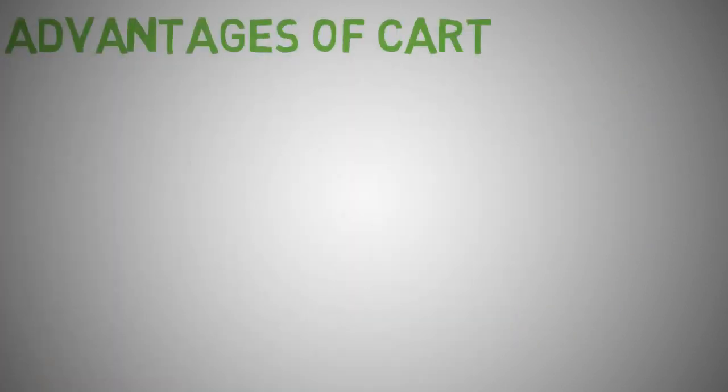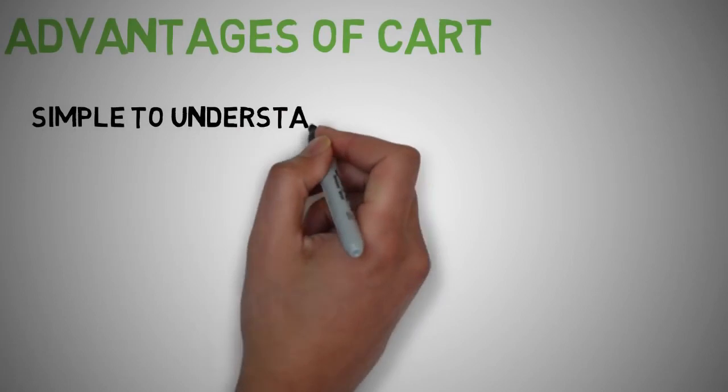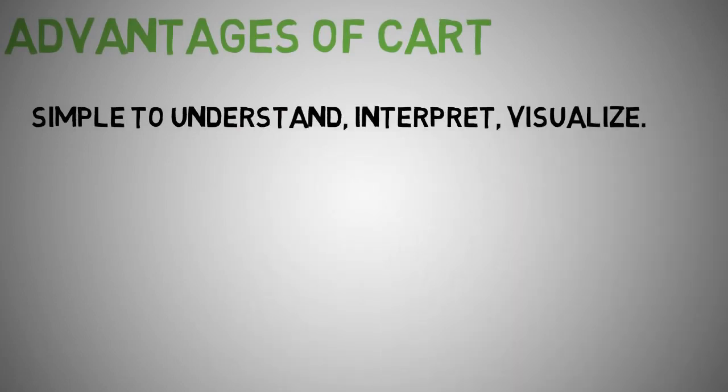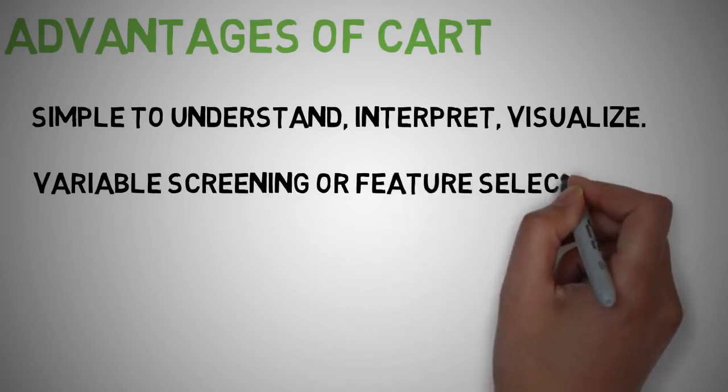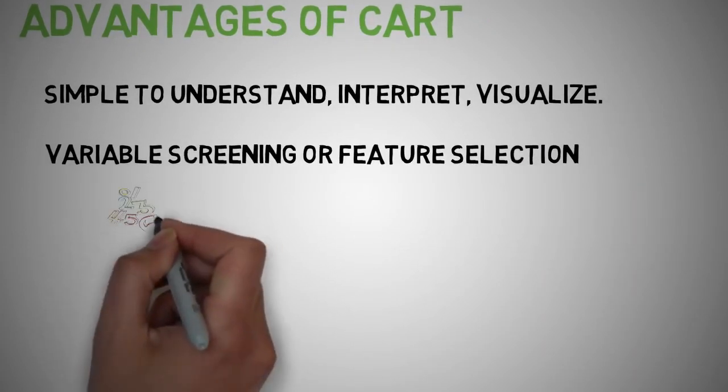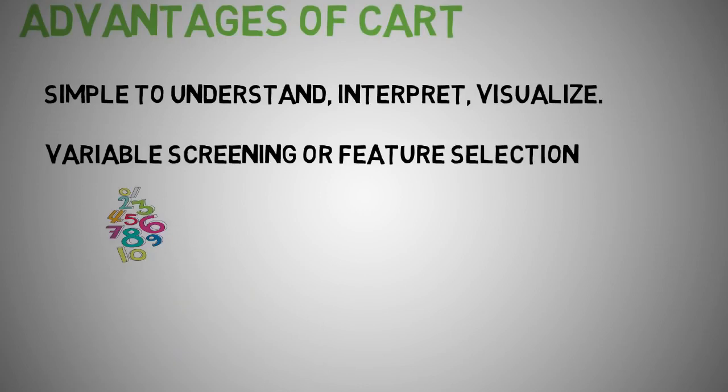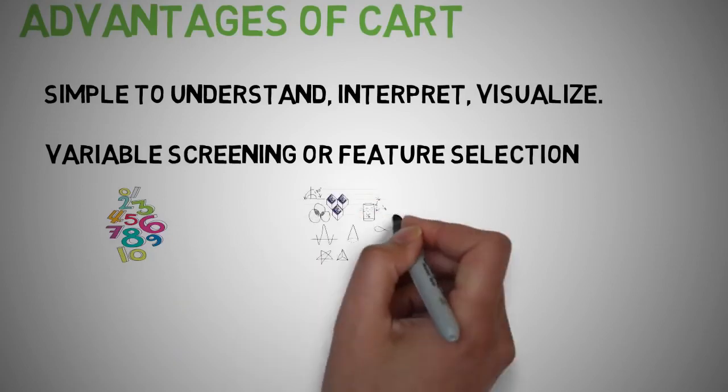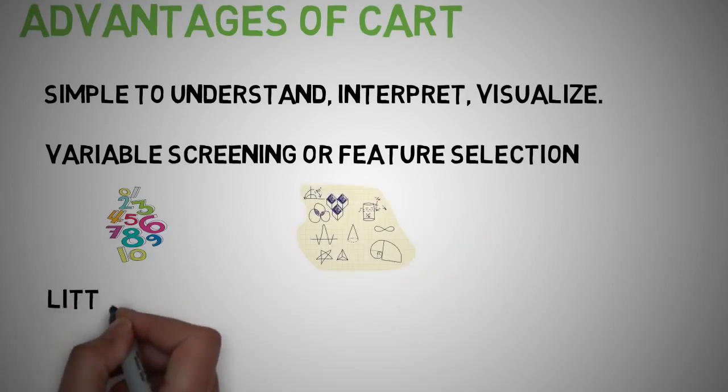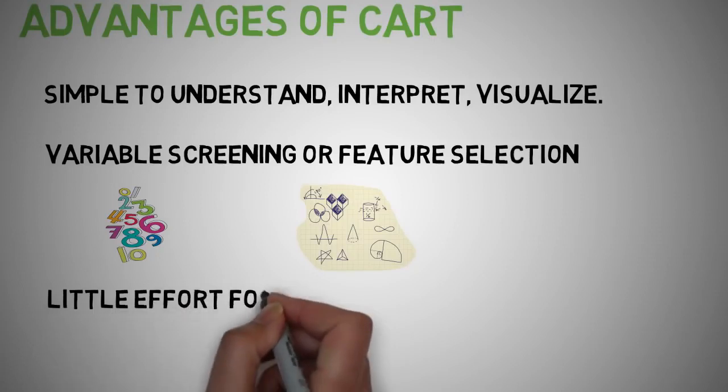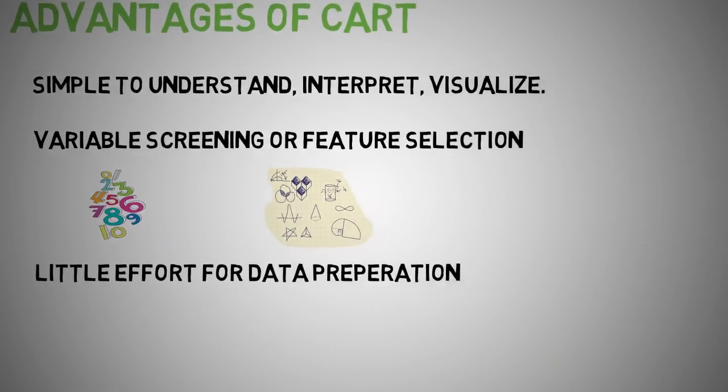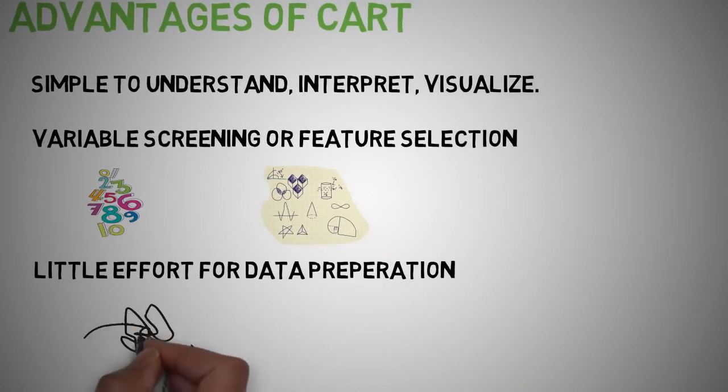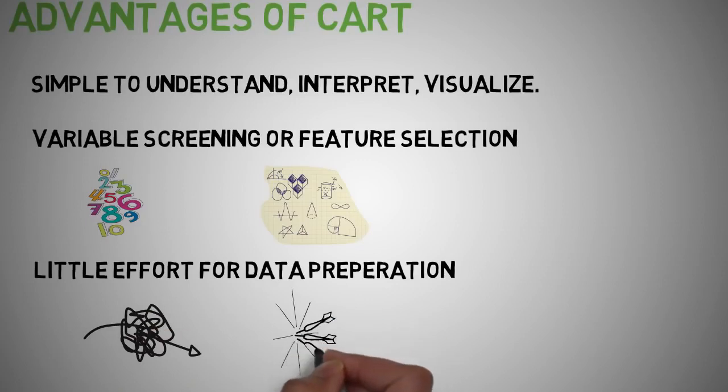The advantages of CART: it is simple to understand, interpret, and visualize. Decision trees implicitly perform variable screening or feature selection. It can handle both numerical as well as categorical data, can also handle multi-output problems. Decision trees require relatively little effort from users for data preparation, and non-linear relationships between parameters do not affect tree performance.